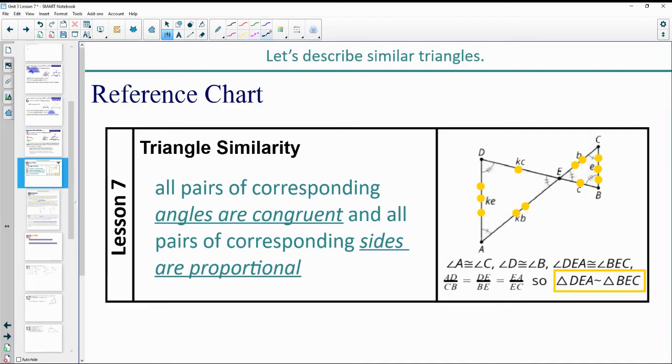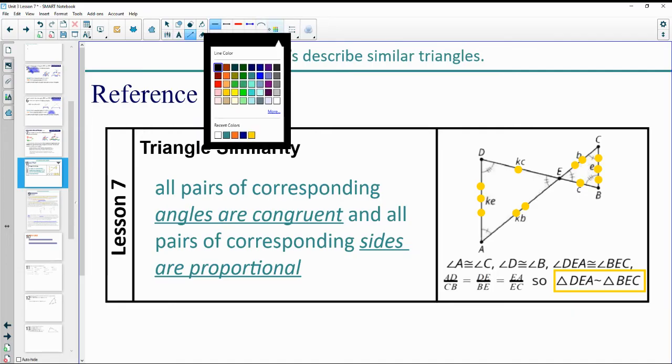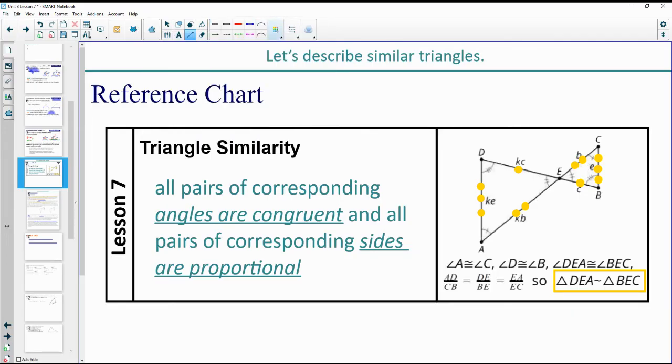You could certainly also use color to do that as well. So you could say this one goes with this one. Then you could do EC with EA, and then you could do DA with CB. So kind of whatever you prefer there, whatever is easier for you to look at.